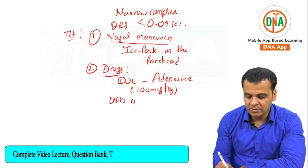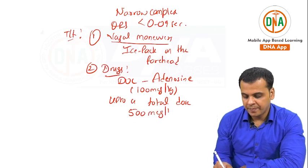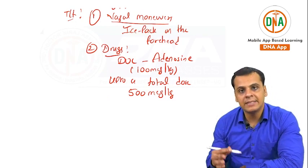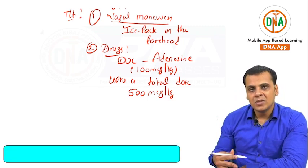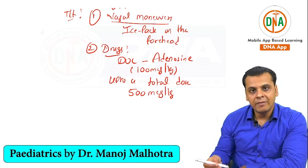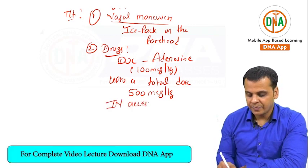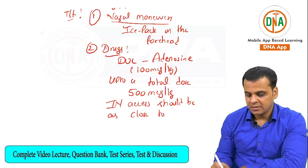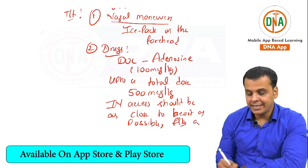The important thing to remember about adenosine is that its half-life is extremely short — 10 to 15 seconds. That is why you have to give it in a vein as close to the heart as possible. IV access should be as close to the heart as possible, followed by a flush so that it reaches the circulation immediately.